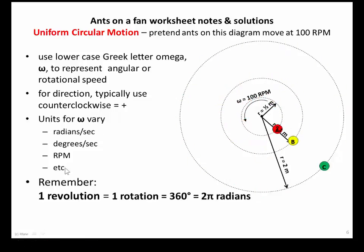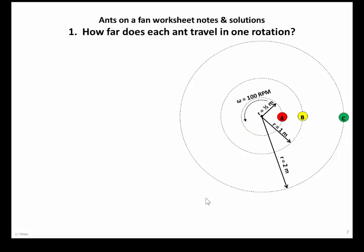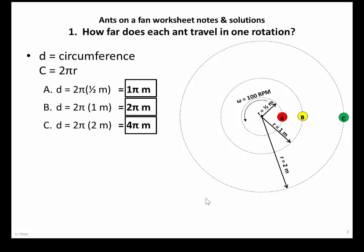I'm going to use the words rotation and revolution as if they're the same word. One rotation is equivalent to going around a circle 360 degrees, or as you know from pre-calculus, that's 2 pi radians. Let's calculate how far each ant travels in one rotation — all we need to do is calculate the circumference. The circumference is 1 pi meters for ant A, 2 pi for ant B, and 4 pi for ant C.